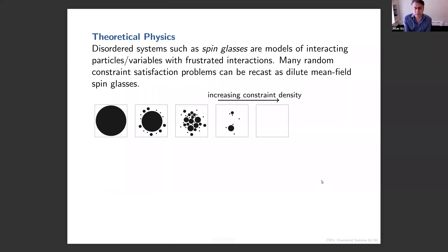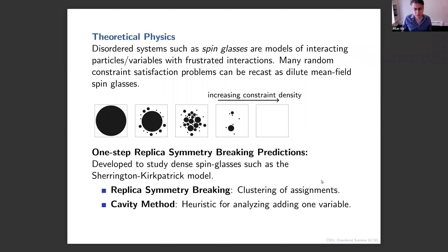The story I want to tell you is about how ideas from theoretical physics — the study of disordered systems such as spin glasses — have led to a whole host of predictions about different phase transitions for these models. The physicists who've worked on these problems don't usually write proofs; most of their theory is theoretical physics, which as a mathematician means there's a whole host of conjectures to try and prove, as well as a rich insight that they've provided.